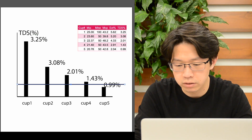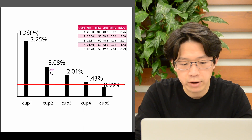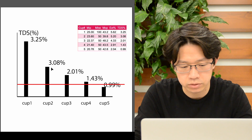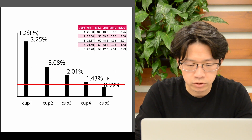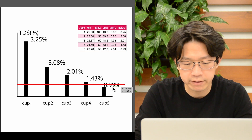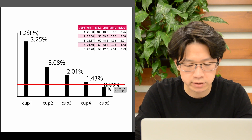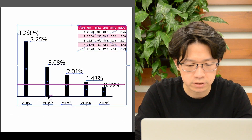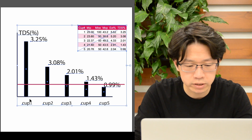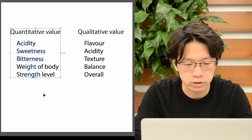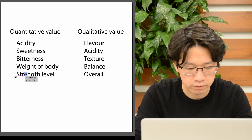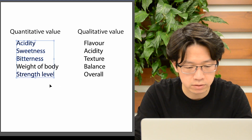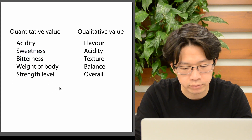Back to the screen — the red line on the chart represents the 1.3% TDS target line. In our brewing advanced class I show how to calculate how many grams of water to add to adjust strength level, so I'll skip that here. After adjusting all cups to 1.3% TDS — note that cup five is already below 1.3% TDS so we taste it as is — we begin a quick sensory evaluation. In the sensory evaluation there are two big categories: quantitative value and qualitative value. For this technical evaluation process we focus on quantity: acidity, sweetness, bitterness, and the strength level of the cup.